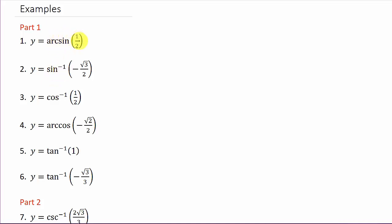The arc sine of 1/2 — what do I need to take the sine of to get 1/2? If you remember those special angles, that would be 30 degrees. So arc sine of 1/2 is 30 degrees, or in radians that's π/6. Now, inverse sine of negative √3/2.